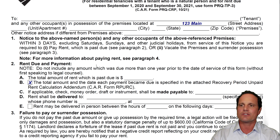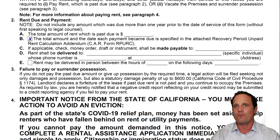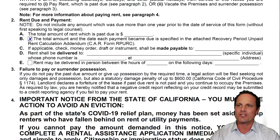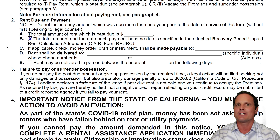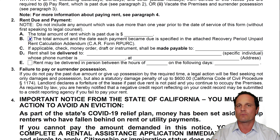Section B mentions a different form — the RPURC — where the rent that's owed will be calculated. We'll discuss that in a minute. The California Association of Realtors and the names they come up with! The next section, C, D, and E, is about who to make any rent payable to and where to take it — if they're going to drop it off, what hours on which days.